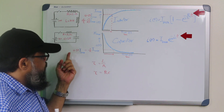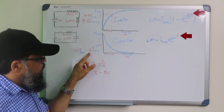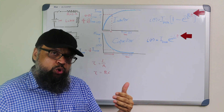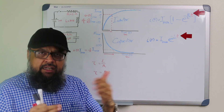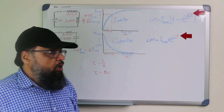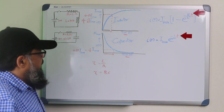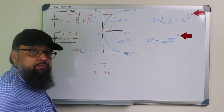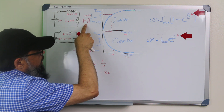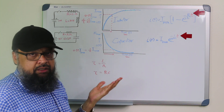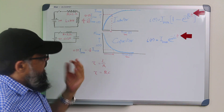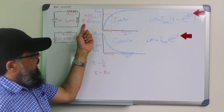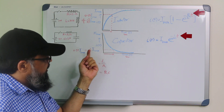What is this 0.37? It is actually 1 divided by e — the base of the natural logarithm. So 1 divided by e, which is approximately 2.718, gives you this 0.37 value. Similarly, 0.63 is basically 1 minus 1 divided by e, or in other words, 1 minus 0.37, which is 63% or 0.63. So there is only one factor, which is 1 divided by e. If it's rising, we subtract it from 1; if it's decreasing, we take it as it is.